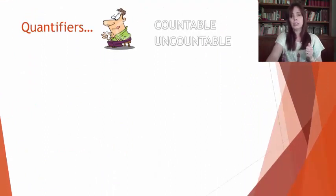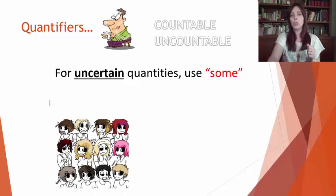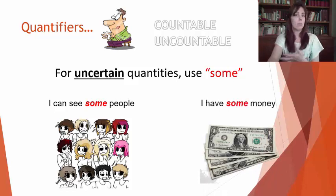Again, let's continue. For uncertain quantities, we use some. Some would be something like a joker. There's an uncertain quantity. So you see some people, and you have some money. Not specifying a quantity. You use it again with both.